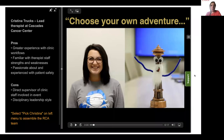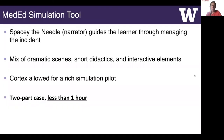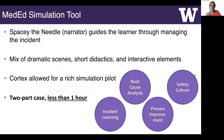The module integrates branched learning pathways where different interactions lead to different outcomes. This allows for teaching complex learning objectives like understanding how to maintain a positive safety culture. The module includes a two-part case which can be completed in less than one hour and covers a wide range of important topics such as incident learning, root cause analysis, and the importance of a blame-free culture.